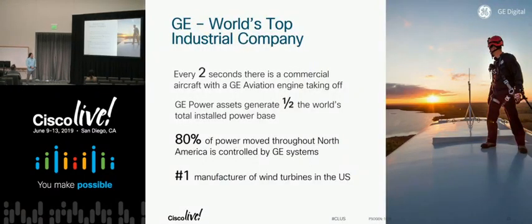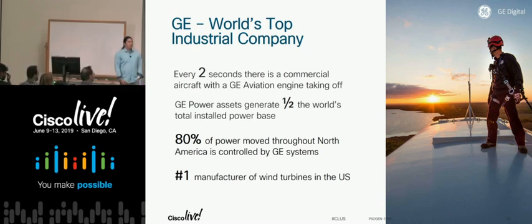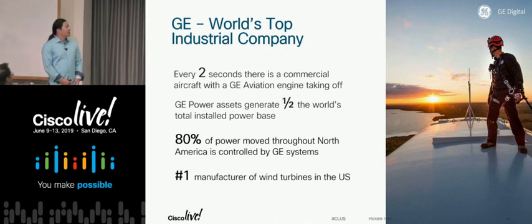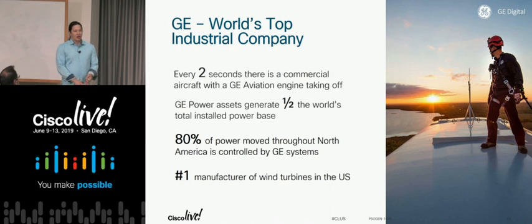When you think about GE, some folks think refrigerators, light bulbs, and consumer electronics. But we're also in every industrial space — we've got seven different verticals. Every two seconds, a commercial aircraft with a GE aviation engine takes off. There are about 2,000 flights in the air at any given time. GE power assets generate about half the world's total installed power base — between hydro, nuclear, mixed-cycle natural gas, and others. 80% of the power moved throughout North America is controlled by GE systems. We're the number one manufacturer of wind turbines in the United States.